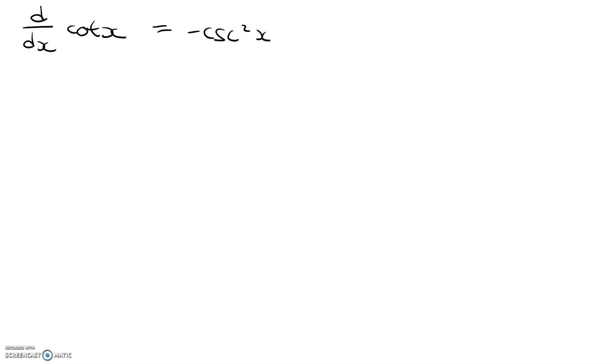Before we start, we need to know that there is an identity that states that cotangent x is equal to cosine x over sine x. We're going to be using this and substituting this in for cotangent x. So let's start off.